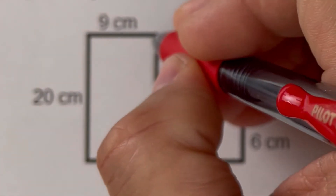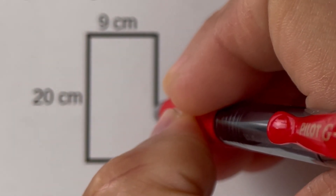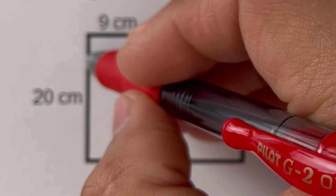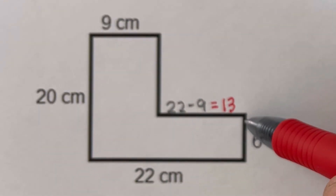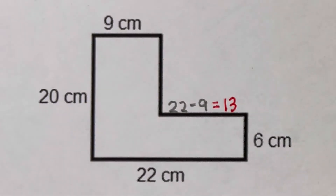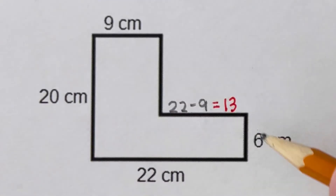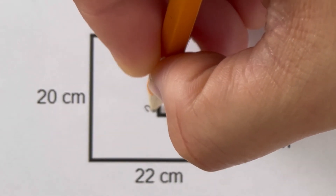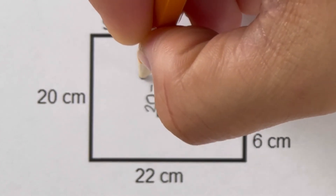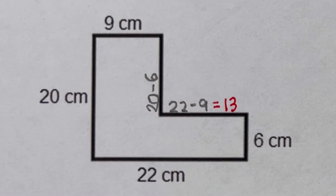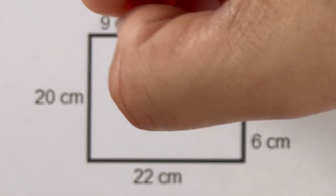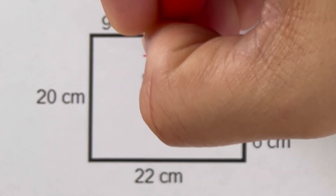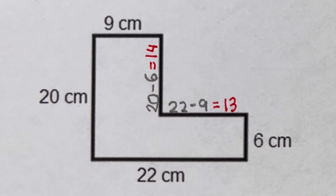Now we determine the other missing side. We know that this whole length is 20 and we have 6 here, so this side can be solved by subtracting 6 from 20. Showing the work on the side: 20 minus 6 equals 14. So this side is 14.